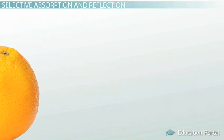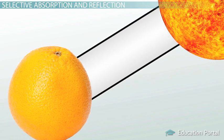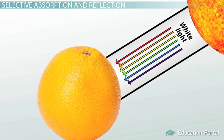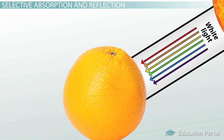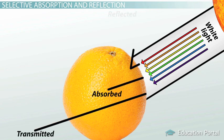Let's say you've got a nice ripe orange in your hand. You walk outside and the sunlight beams down on the orange from above. The sunlight is white light, so it contains all the different frequencies in the visible light spectrum. Many different waves of light beam down on the orange, each wave a different frequency. When a light wave strikes any object, it can do one of three things: it can be transmitted, it can be absorbed, or it can be reflected.